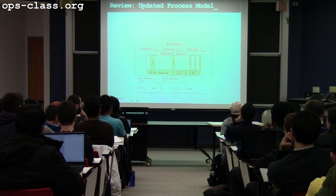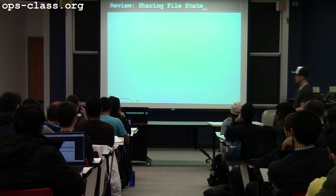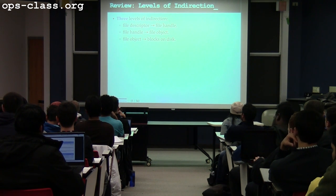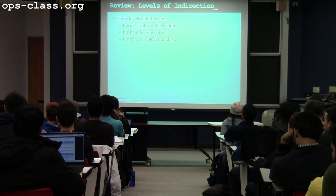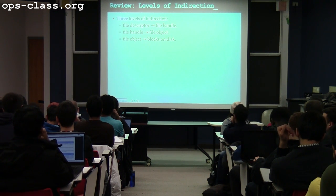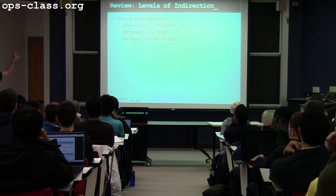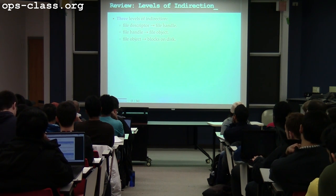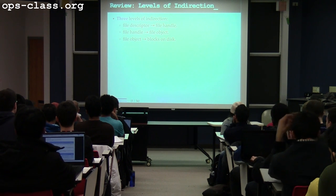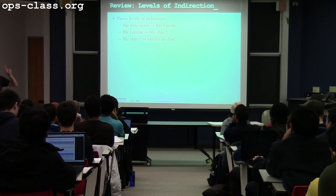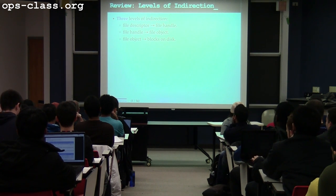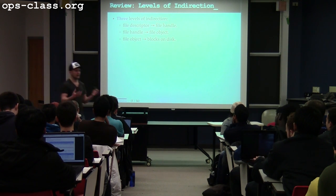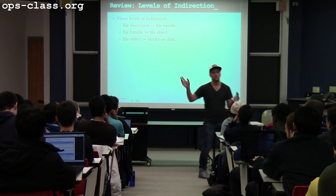Remember last time we made this subtle change to the process model where we introduced a new level of indirection in how file descriptors — the identifiers that processes use to identify files they're using — map down to the actual lower-level identifiers that the kernel uses to identify files. The file descriptor maps to a file handle. The file descriptor is private to each process. The file handles are usually private to each process except in a couple of cases we're going to talk about today, where they can potentially be shared by two or more processes.